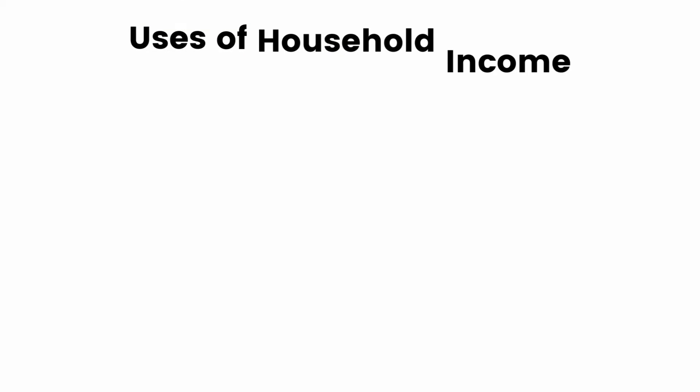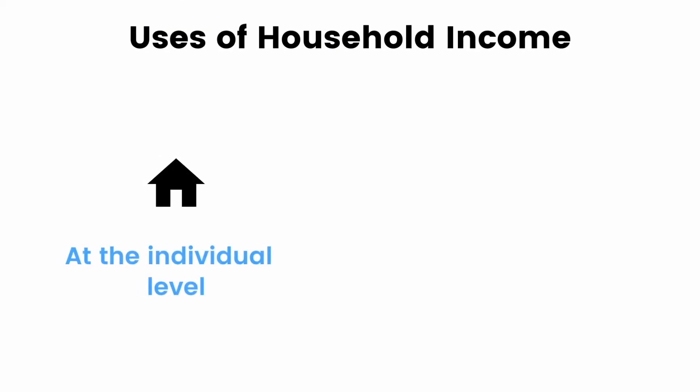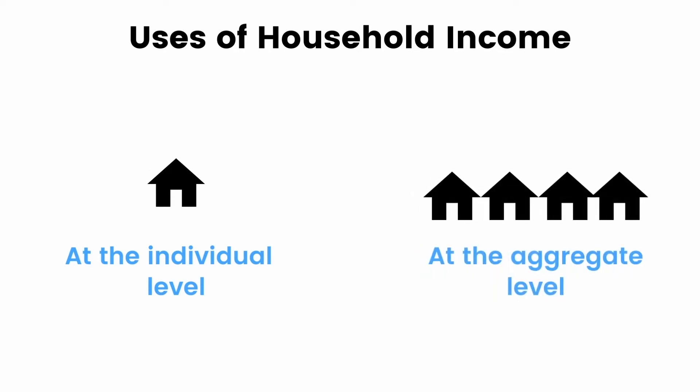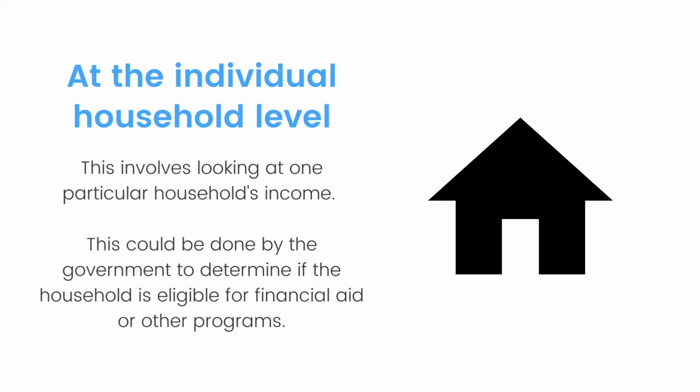So what is household income used for? Household income is used on an individual level and also on an aggregate level. At the individual level, this involves looking at one particular household's income — for example, by the government to determine if the household is eligible for financial aid or other types of programs.